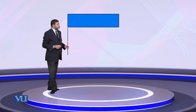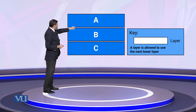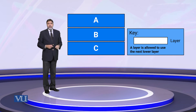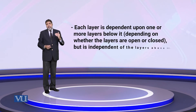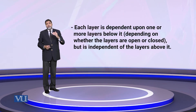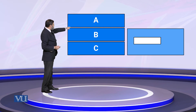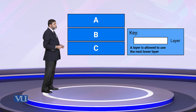So we have a layered system in which we have A, B, and C — three layers of the system. Each layer is dependent upon one or more layers below it. For example, A is dependent upon B or C as well, and B is dependent upon C, not the layer on top of it.